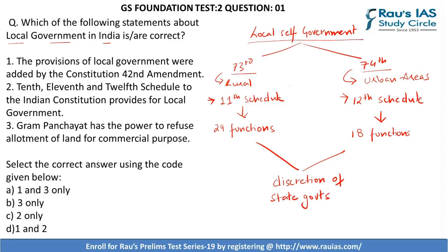The first statement reads: the provisions of local government were added by the Constitution 42nd Amendment. This is wrong. We know they were added by the 73rd and 74th Amendments.